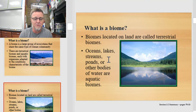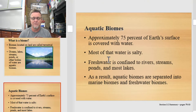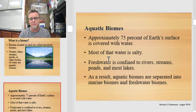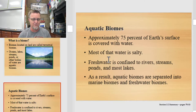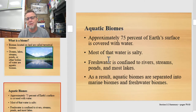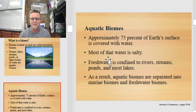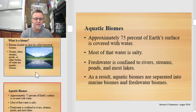Biomes located on land are the terrestrial ones. Oceans, lakes, streams, ponds, and other bodies of water are the aquatic ones. Aquatic biomes cover approximately 70% to 75% of the Earth's surface, depending on whether you're just talking about marine biomes or marine plus freshwater biomes. Most of the aquatic biomes on Earth are actually salty. Freshwater is confined to rivers, streams, ponds, and most lakes on the surface.